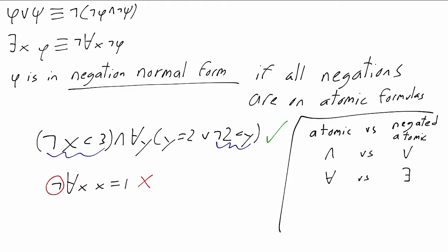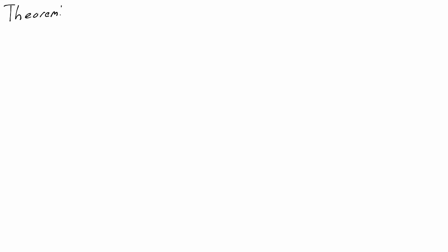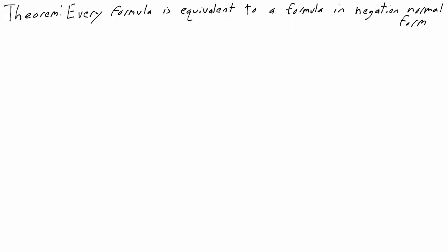And this duality is something we want and we're going to make use of it. What we need to know about negation normal form is that every formula phi is equivalent to a formula in negation normal form, so we're not going to be losing anything when we decide to require that all formulas be in negation normal form. The idea is that we can use the De Morgan duality to push negations towards the inside.